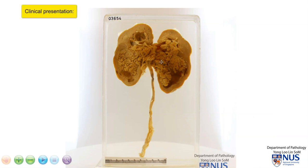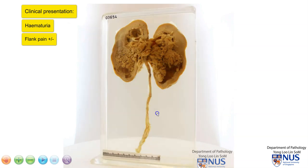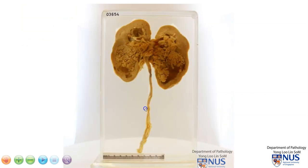Clinically, these patients may present with hematuria, and there may be some accompanying flank pain as well. Interestingly, on imaging, the actual outline of the kidney as you can see here is actually more or less normal. The picture would be a little bit different if this were a renal cell carcinoma, where the kidney itself would be more distorted.